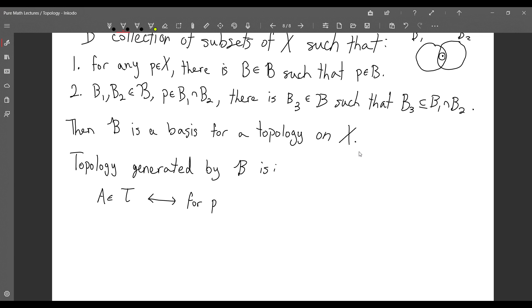If you take a point in A, there is a basis element B such that P is contained in B and B is contained in A. So this is a characterization of the open sets given some basis. The open sets are sets such that if I pick any point, then I can find a basis element.